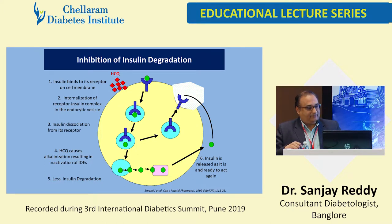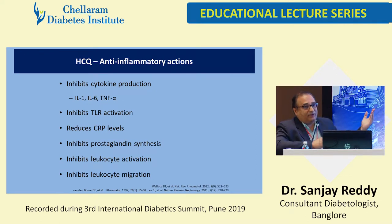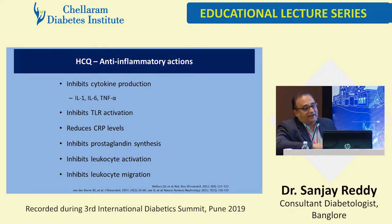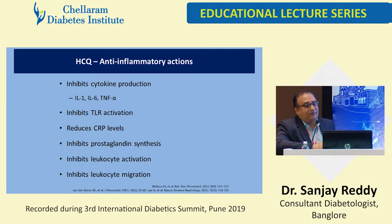Regarding anti-inflammatory effects, HCQ acts on IL-1, IL-6, TNF-alpha — it inhibits TLR activation, reduces CRP levels, inhibits prostaglandin synthesis, inhibits leukotriene activation and leukocyte migration. Another important effect is that it increases adiponectin levels, which I will show in a couple of studies later.